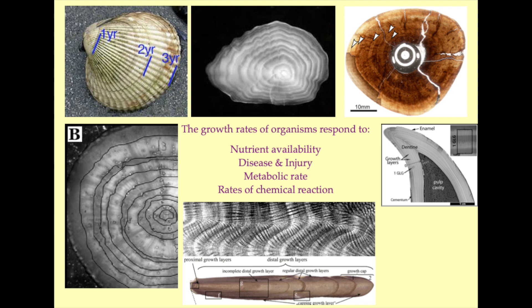Moving clockwise from the top left-hand example in this figure, we have mollusk shells, fish otoliths, dinosaur bones, porpoise teeth, coral growth rings, sea urchin spines and milkweed root. Each of these biological remains preserves a sequential record of the environmental conditions experienced by each organism — in particular, nutrient availability, exposure to disease or injury, metabolic rate and chemical rates of reaction.